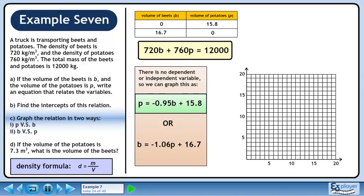Let's start by graphing p equals minus 0.95b plus 15.8. Label the x-axis b. Label the y-axis p. Let's graph the line using the intercepts from the table in part a. Plot the p-intercept at 15.8.